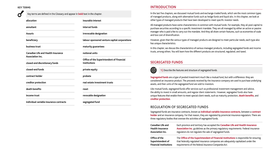However, given that the various types of managed products are designed to meet particular needs, each type also has unique characteristics. In this chapter, we discuss the characteristics of various managed products, including segregated funds and income trusts, among others. You will learn how the different products are structured, regulated, and taxed.